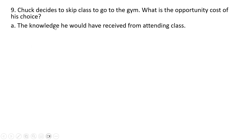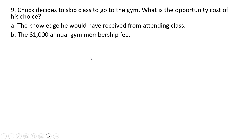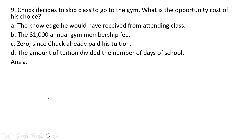Question 9. Chuck decides to skip class and go to the gym. What is the opportunity cost of his choice? The knowledge he would have received from attending class — that is the correct answer. Answer choice A.